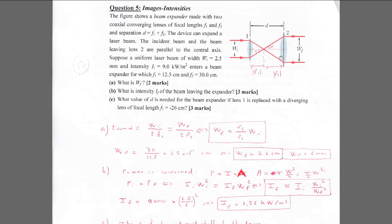The beam has circular symmetry, so the cross-sectional area is pi times r squared, which equals pi over 4 times w squared. Setting power in equal to power out: intensity_initial times area_initial equals intensity_final times area_final. The pi over 4 cancels, giving a simple equation involving the ratio of widths squared.